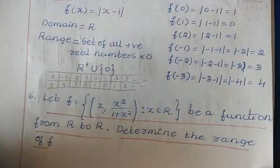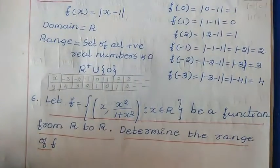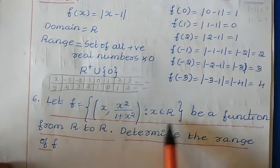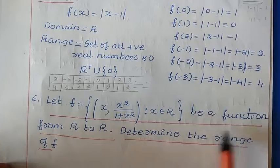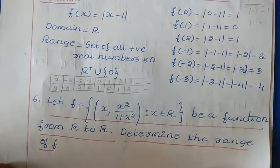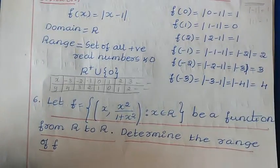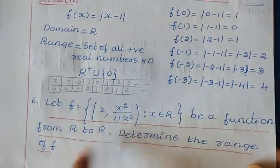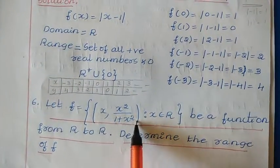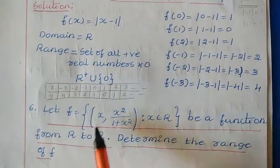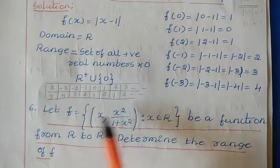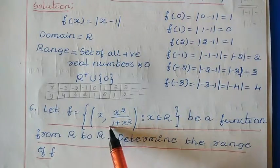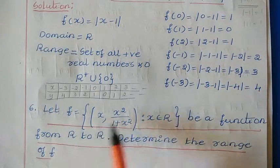Next, question number 6: let f = {(x, x²/(1+x²)) : x ∈ ℝ} be a function from ℝ to ℝ. Determine the range of f. Here we need to find out the range. They have given the ordered pair — just by seeing this, you can say that this is the ordered pair, as we have two elements written within parentheses with a comma.